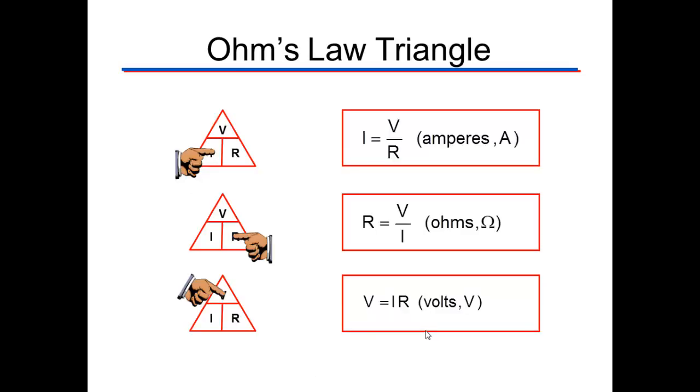Remember, we can use the Ohm's Law triangle. We cover the quantity we want to solve for and the others give us the relationship. In the triangle, we can see that I equals V divided by R, R equals V divided by I, and V equals I times R. You just cover up whichever one you want to know, or you can mathematically rearrange V equals I times R.